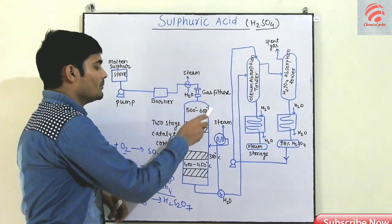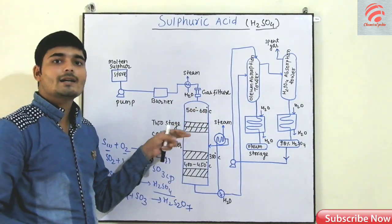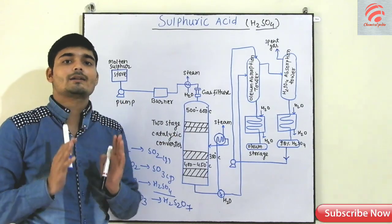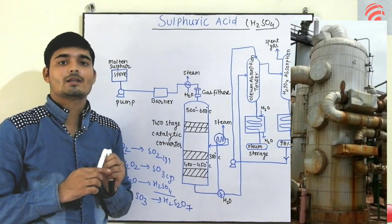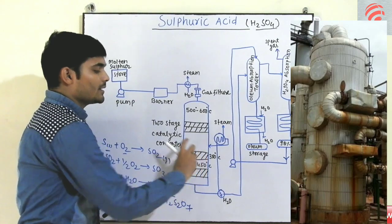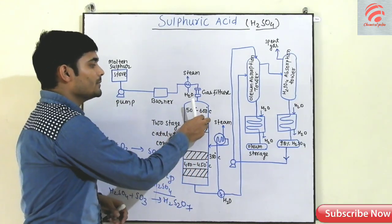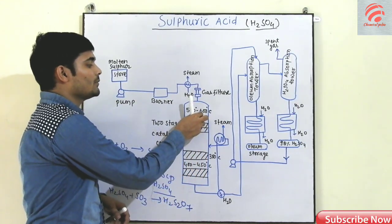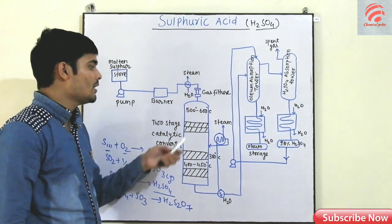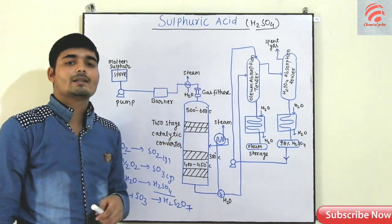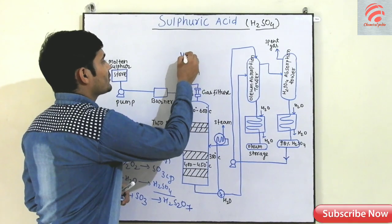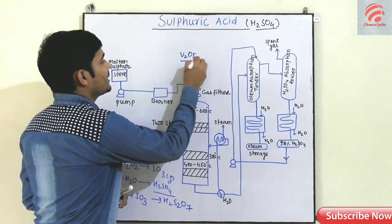Now we take two stages in the catalyst reactor where we have the reaction — two stages, one stage at a time. When we do this, the temperature is 500 to 600 degrees centigrade. Here we use V2O5, Vanadium Pentoxide, as the catalyst.